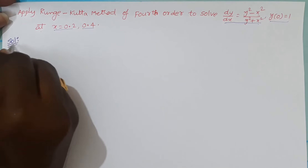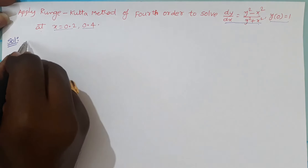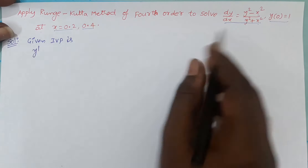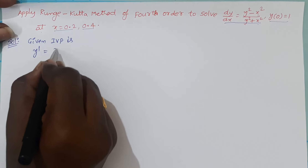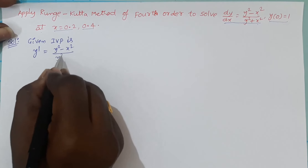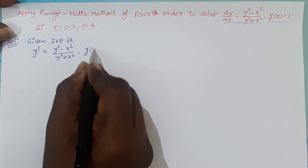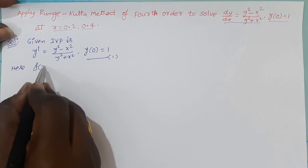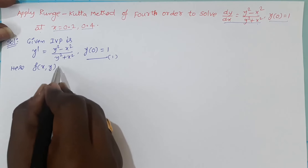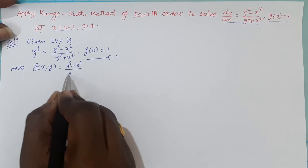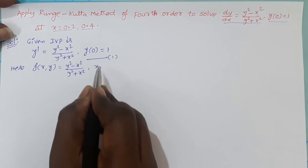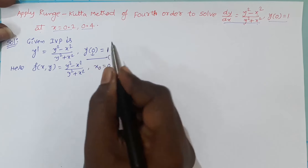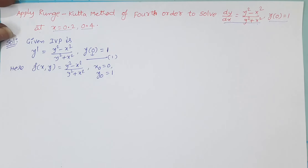See the solution. First, write the given initial value problem. The given IVP is y' = dy/dx = (y² - x²) / (y² + x²), with initial condition y(0) = 1 — take it as equation number 1. Here the right-hand side function is represented by f(x, y) = (y² - x²) / (y² + x²). The initial values are x₀ = 0 and y₀ = 1.